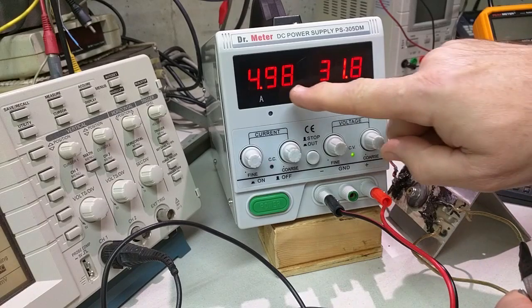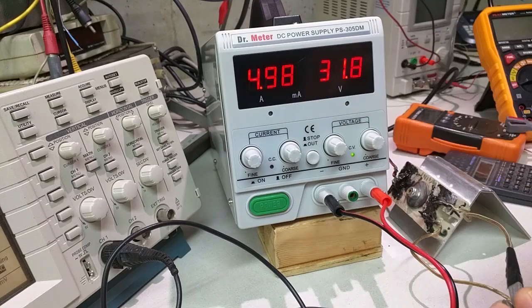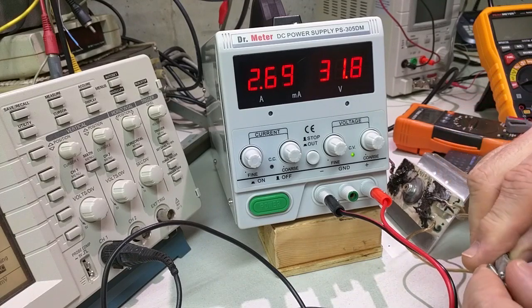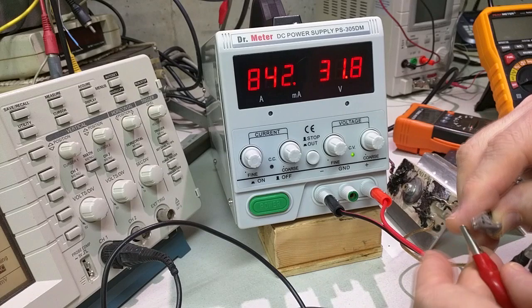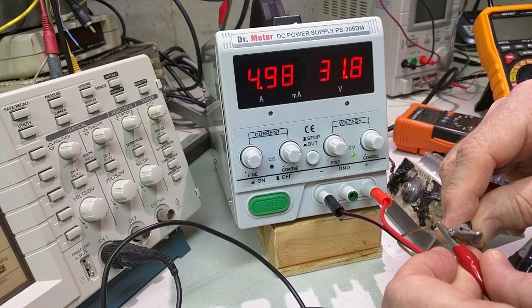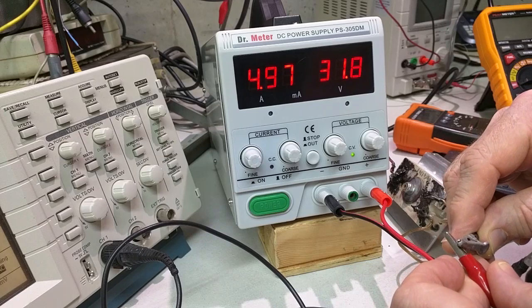And it's producing 5 amps and it's still 31.8. So you can see as I put the load on there, there's even a little spark going on right here, a lot of current. The power supply is not budging. It's regulating perfectly.